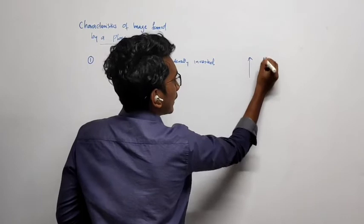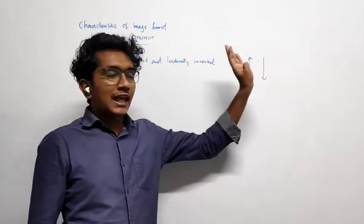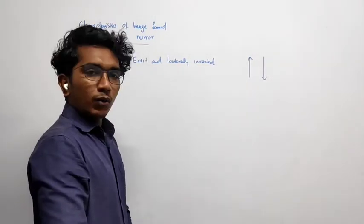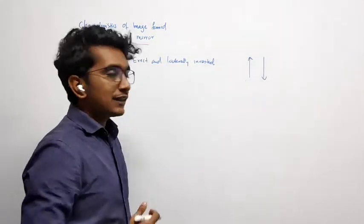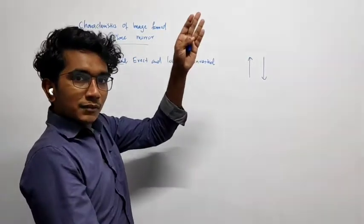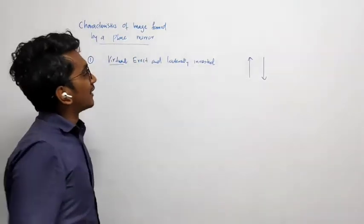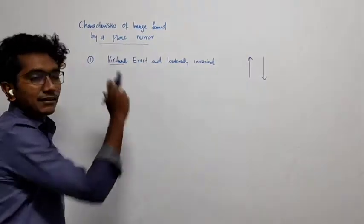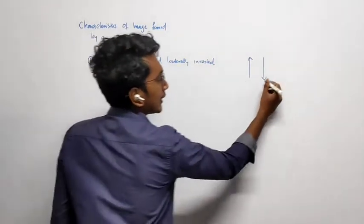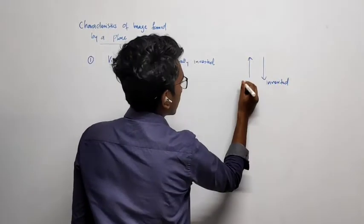What is the opposite of erect? It is inverted. So for example, if I keep a plane mirror in front of me, I can see myself upright. If the image were inverted, I would appear flipped upside down. So that is the difference between erect and inverted. Our image in a plane mirror is erect.